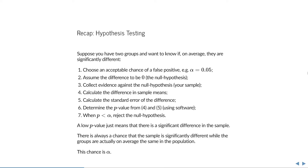From the sample, we calculate the sample means and the difference between them, and then we calculate the standard error of the difference. From these values, we can determine a p-value, which we usually do using software. And when the p-value is lower than the chosen level of significance alpha, we reject the null hypothesis. So a low p-value just means that there is a significant difference in the sample. But the sample is not of interest — we are interested in the population that the sample came from. And there's always a chance that the sample is significantly different, while the groups are, on average, the same in the population, and this chance is equal to alpha.